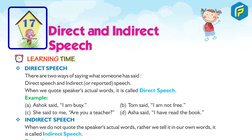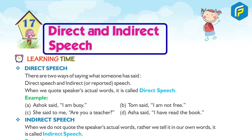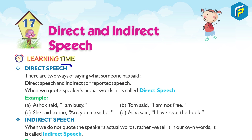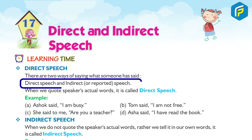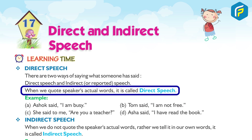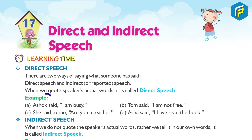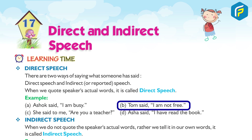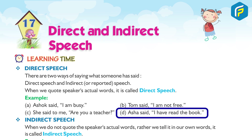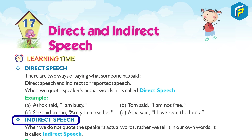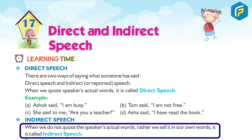Chapter 17: Direct and Indirect Speech. There are two ways of saying what someone has said: direct speech and indirect or reported speech. When we quote the speaker's actual words, it is called direct speech. Examples: (a) Ashok said, 'I am busy.' (b) Tom said, 'I am not free.' (c) She said to me, 'Are you a teacher?'